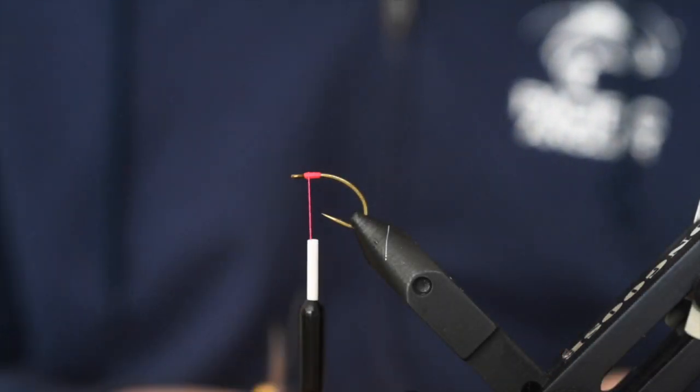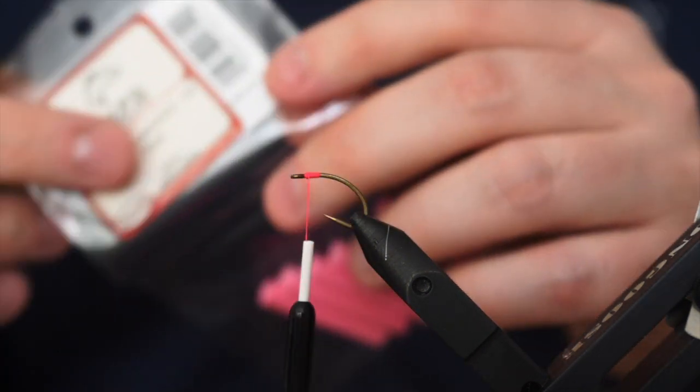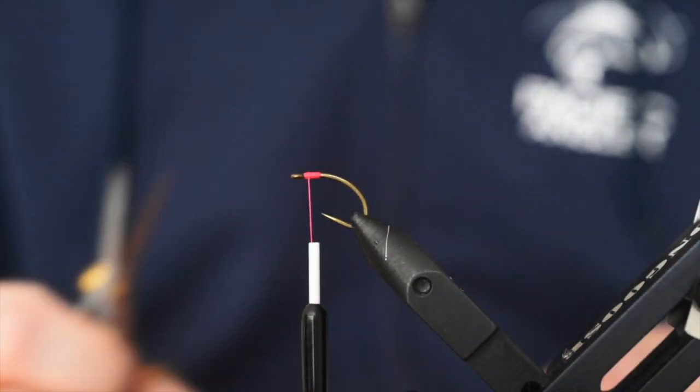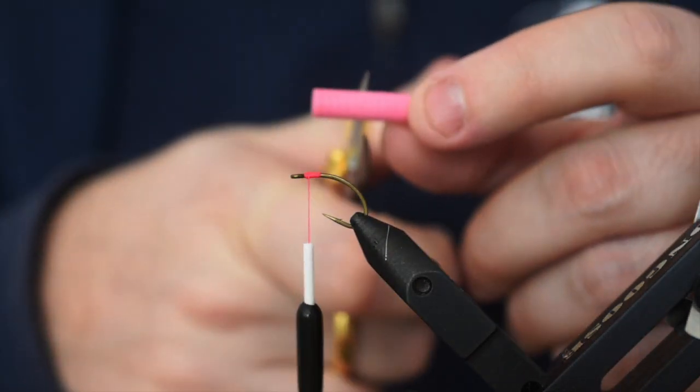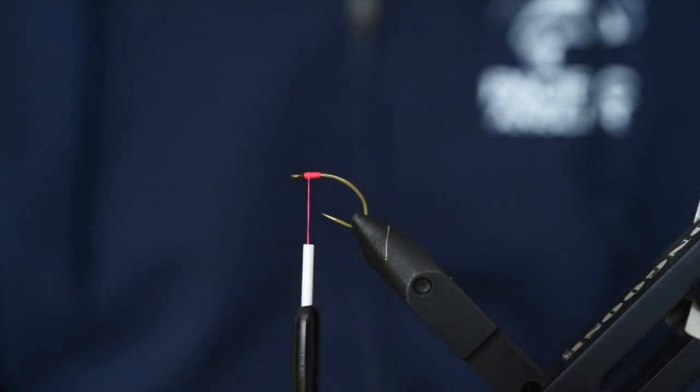The thing that makes these things float is some foam cylinders. Foam cylinder, quarter inch. This is pink. Obviously, they come in a tube like that. One tube gets me about three sets of eyes, so when I'm tying these in production mode, I'll sit there and cut up all the flies, or cut up all the eyes, into thirds.